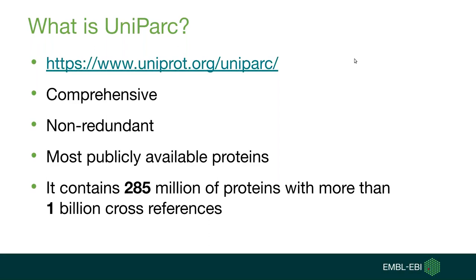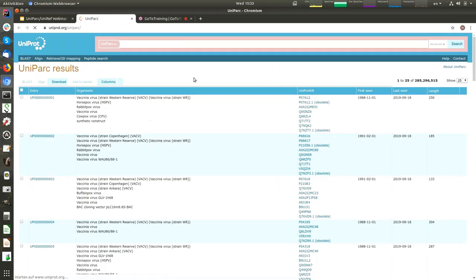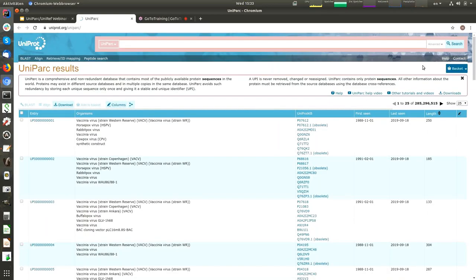UPI is never removed, changed, or re-assigned. Currently UniParc contains 285 million protein sequences with approaching two billion cross-references. If I go to follow the link, this is how the UniParc home web page looks like. So let's go through UniParc properties in depth with examples.